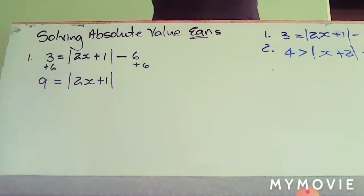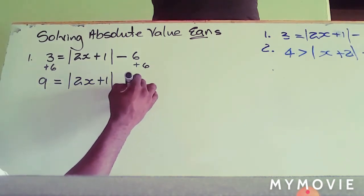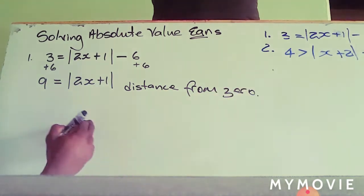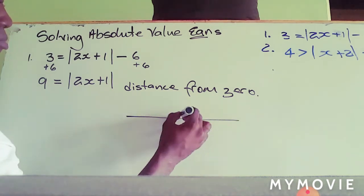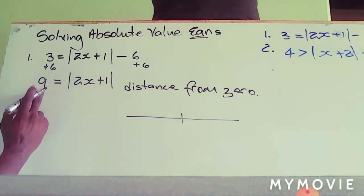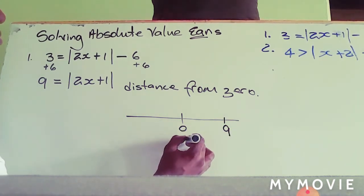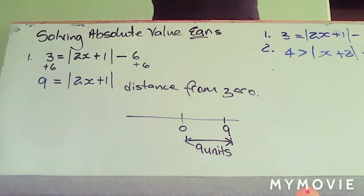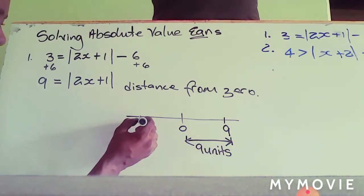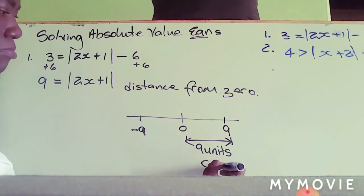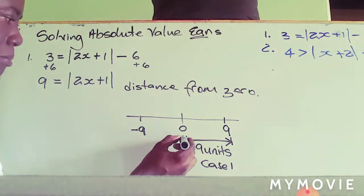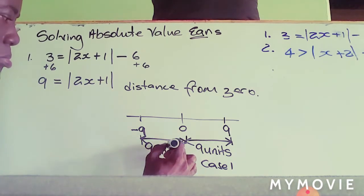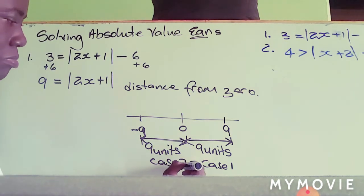Now, the absolute value represents the distance from zero. Whatever we have inside that absolute value notation is saying that it equals nine. Let's look at the number line quickly — absolute value deals with the distance of a number from zero, so we're looking at how far it is from zero. Because it's nine units, we realize we're going to have two cases: we could also get nine units on the negative side, since units are not negative. So we have case one with positive nine and case two with negative nine.